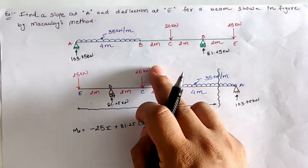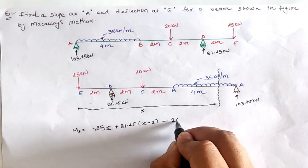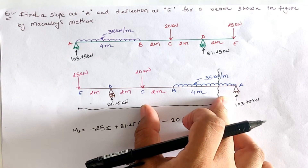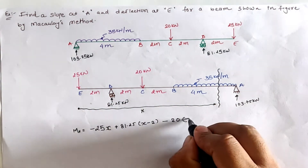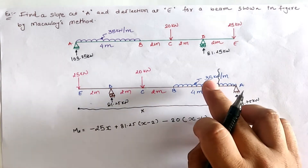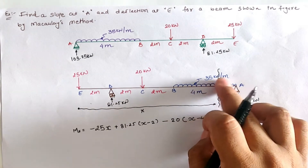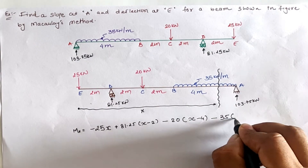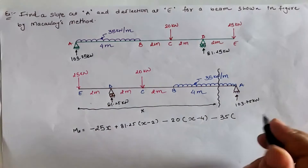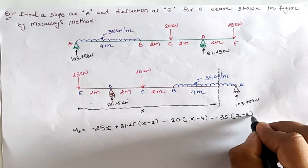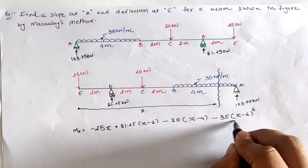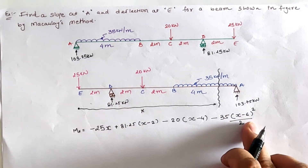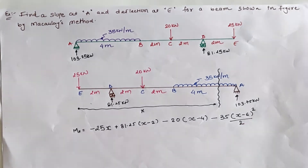The next value is due to the 20 kN load — it is in the anticlockwise direction, so it is −20(x − 4), since location C is at 4 meters from the left. Due to the UDL of 35 kN/m, an anticlockwise moment is generated, so it is −35. The UDL spans (x − 6), giving a total load of (x − 6) and a CG distance of (x − 6)/2, so the total UDL moment is −(35/2)(x − 6)².